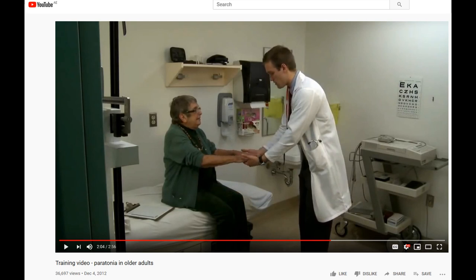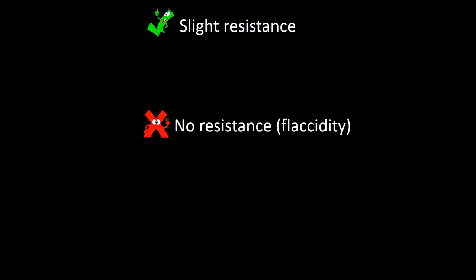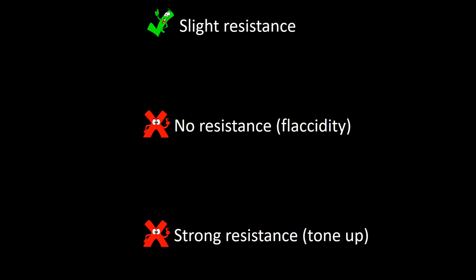Next, we go to the upper extremities, following fundamentally the same principles. Hold the hand and move it up and down several times, then supinate and pronate the patient's arm and rotate the wrist. Tone interpretation in the upper extremity is the same as in the lower: normal if slight resistance, abnormally low if no resistance, and abnormally high if strong resistance.